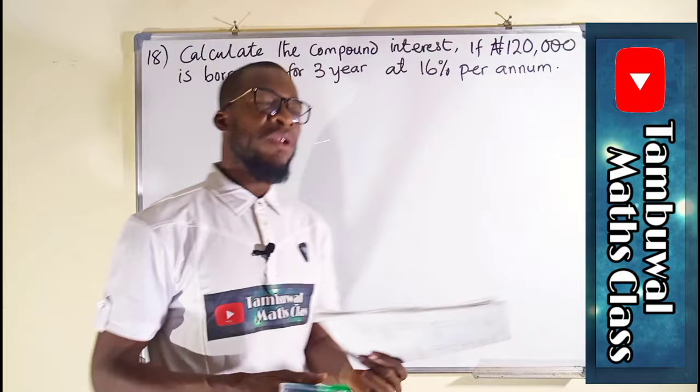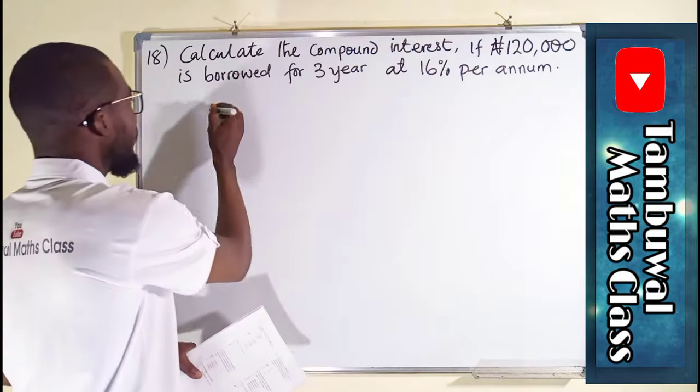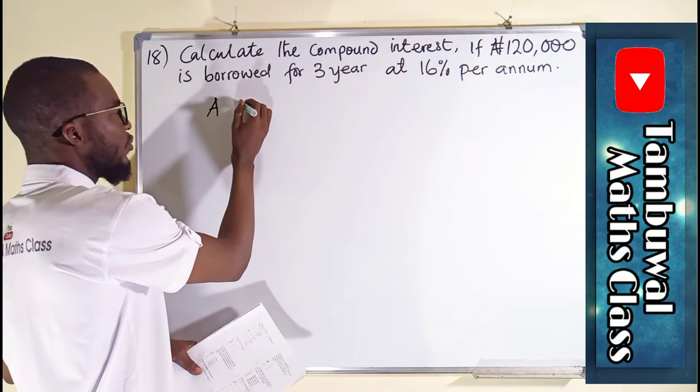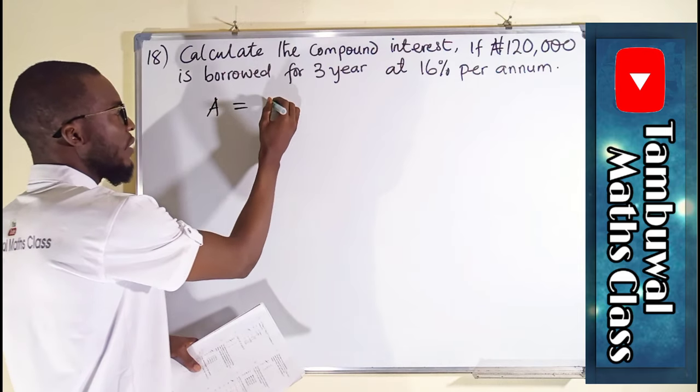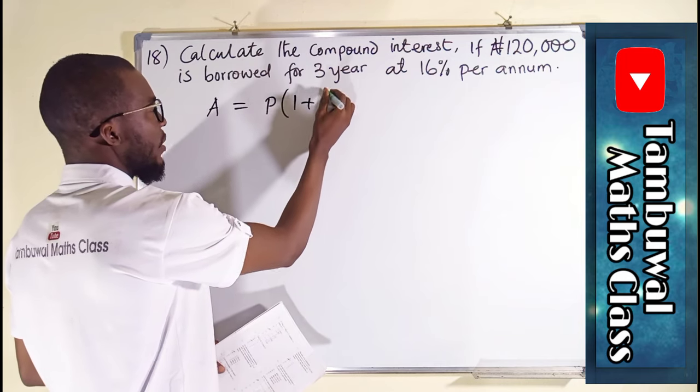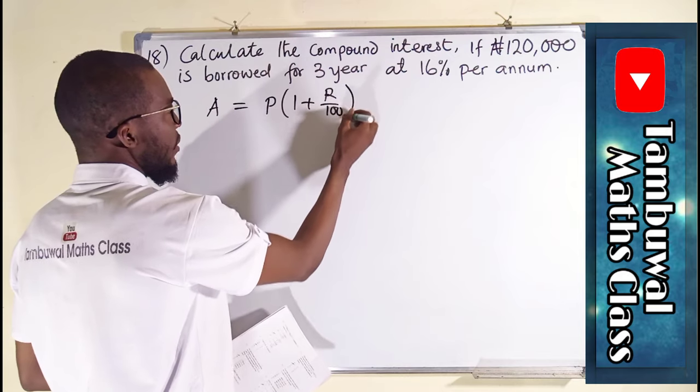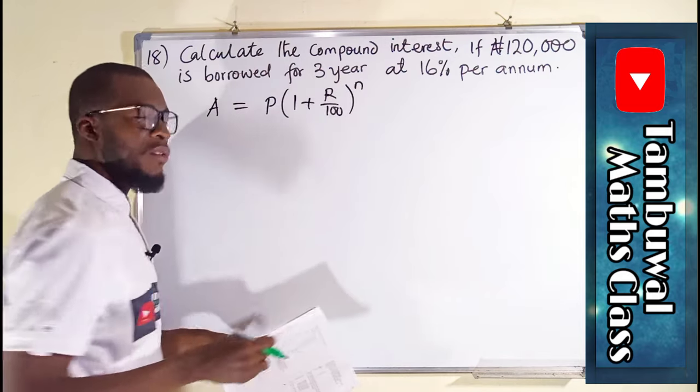In compound interest, the formula used in calculating the amount is A, which is the total amount, equals the principal amount multiplied by 1 plus r over 100, where r is the rate, raised to the power of n, and n is the number of years.